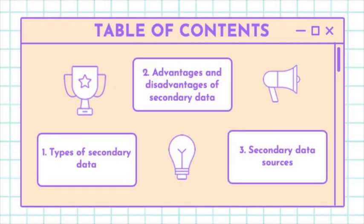This topic is related to chapter 8 of your research methodology book. Here is the table of contents for this week. First, we are going to look at the types of secondary data. Second, we will go into the advantages and disadvantages of secondary data. And finally, we are going to look at what are the secondary data sources.